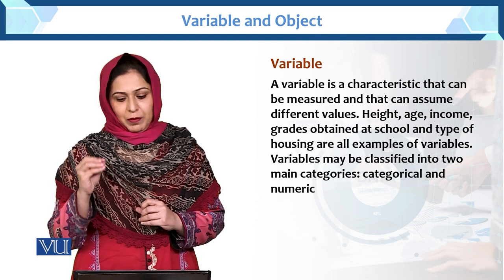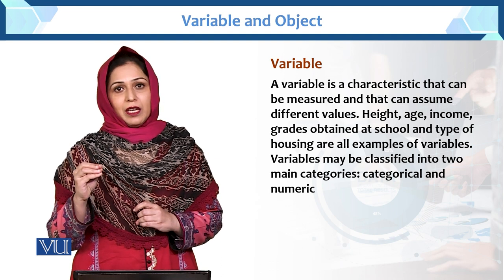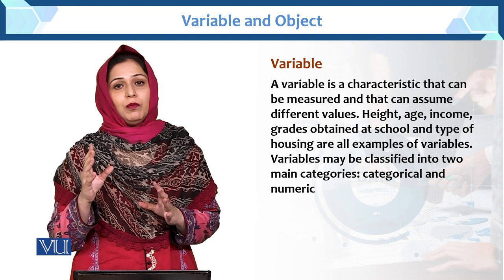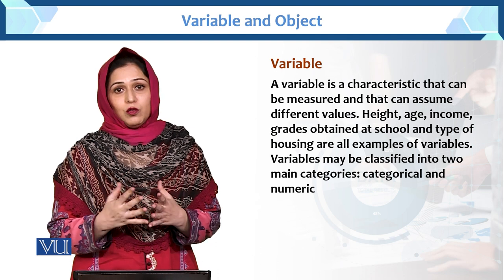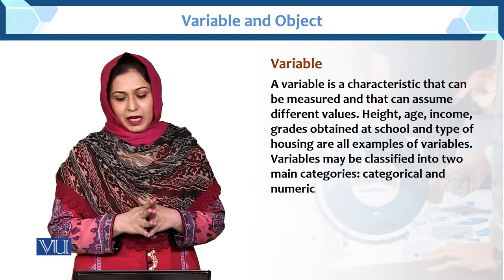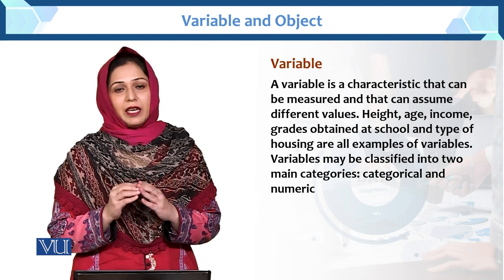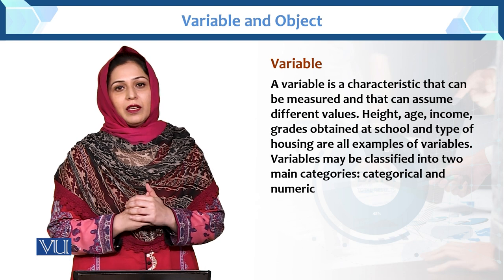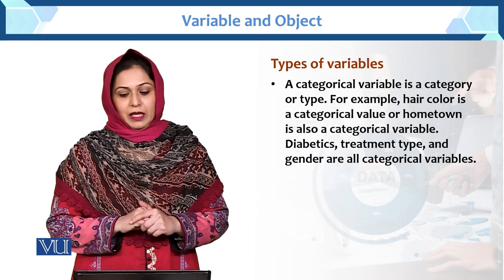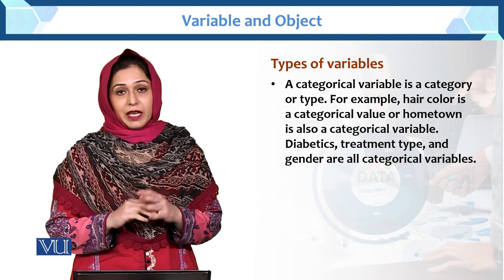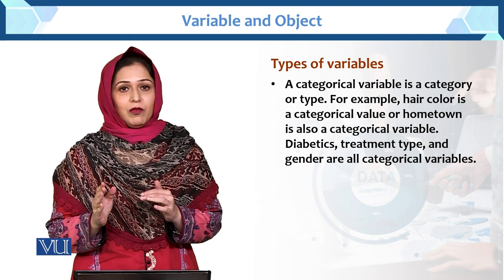These are all examples of variable. A variable may be classified into two main categories. Variable ko hum two main categories mein divide kar rahe hain. Woh kaunsi two main categories hain? That is categorical and numeric.